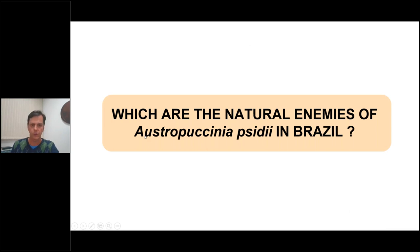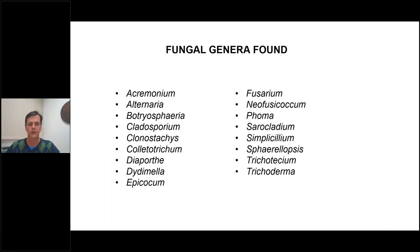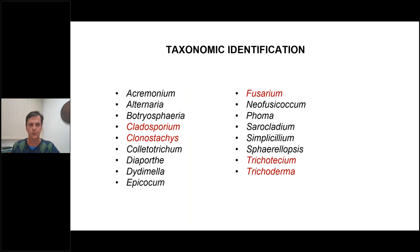Now I will show you the natural enemies we have found associated with Austropuccinia psidii in Brazil. We have here a partial list with some genera. Because we are at a slow pace with this project, until now we have only looked into isolations belonging to these genera: Cladosporium, Clonostachys, Fusarium, Trichothecium, and Trichoderma.